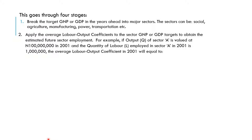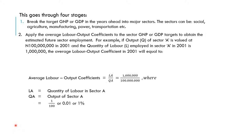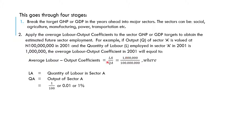Second, apply the average labor output coefficient to the sector GNP or GDP target to obtain the estimated future sector employment. For example, if the output of sector A is valued at 100 million in 2001, and the quantity of labor employed in sector A in 2001 is 1 million, the average labor output coefficient will be labor divided by output — that is 1 million over 100 million — which gives us 1 over 100, or 0.01, which is 1%.